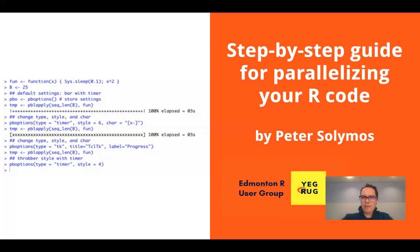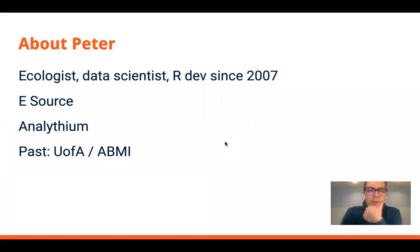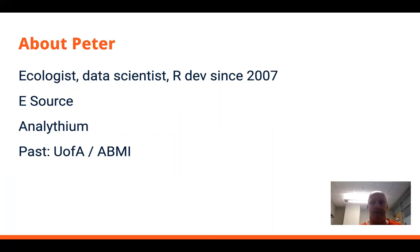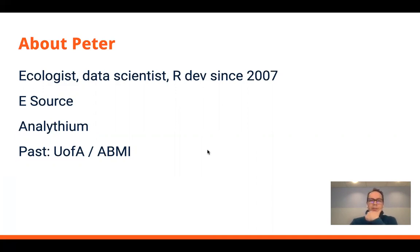A few words about me — I'm an ecologist and I've been developing and writing R code since 2007. Right now I work at a company called eSource, where I work on data for utility companies. I also have a company on the side called Analytium Solutions, and I used to work at the University of Alberta Biodiversity Monitoring Institute. I'll be using a publicly available but cleaned-up dataset from my previous job to illustrate some of the issues you might run into.